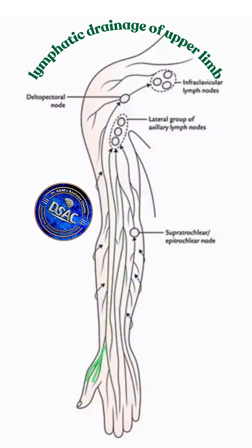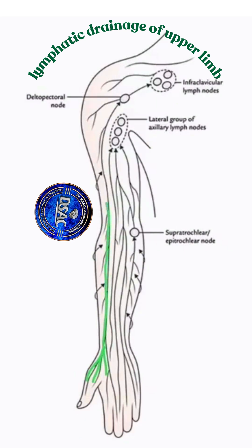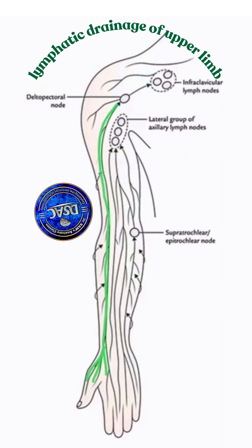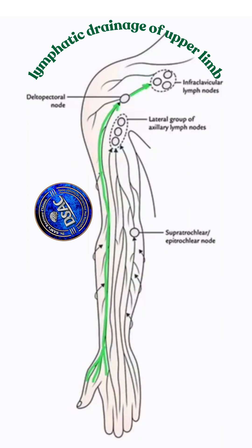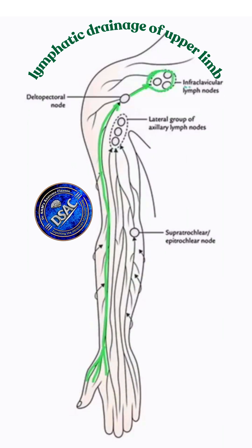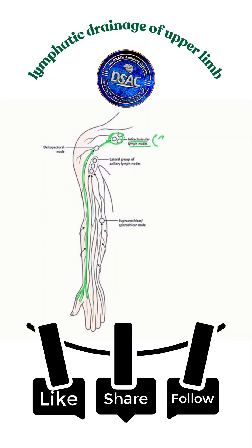The lymphatics from the thumb and its web accompany the cephalic vein and run along the lateral border of the forearm, then along the lateral border of the biceps brachii. They enter the deltopectoral groove along with the cephalic vein, pierce the clavipectoral fascia, and ultimately drain into the infraclavicular group of lymph nodes, also called cephalic nodes.